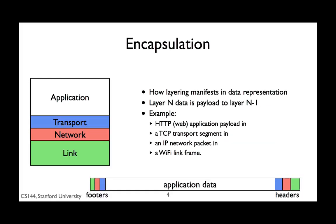Here's a more complete example. Let's say that you're browsing the web using a computer connected through Wi-Fi, wireless Ethernet. Your web browser generates an HTTP GET request. This GET request is the payload of a TCP segment. The TCP segment encapsulating the HTTP GET becomes the payload of an IP packet. This IP packet, in turn encapsulating the TCP segment and the HTTP GET, is the payload of a Wi-Fi frame. If you were to look at the bytes your computer sends, they'd look like this. The outermost encapsulating format is the Wi-Fi frame, inside of which is an IP packet, inside of which is a TCP segment, inside of which, finally, is the HTTP GET.